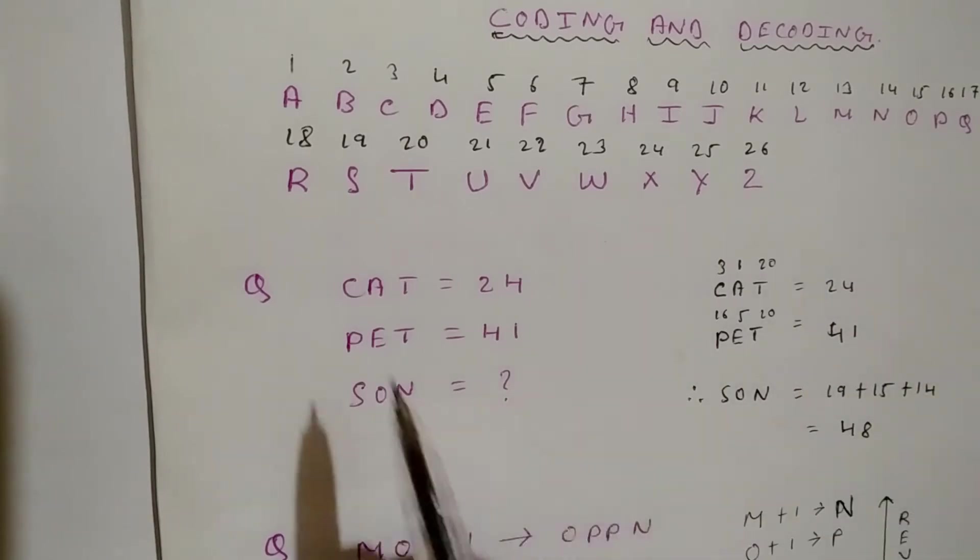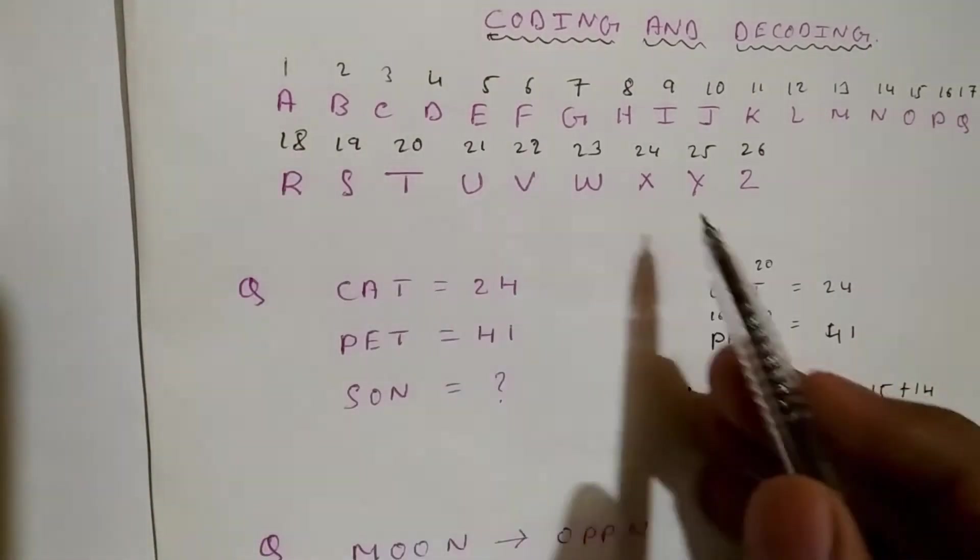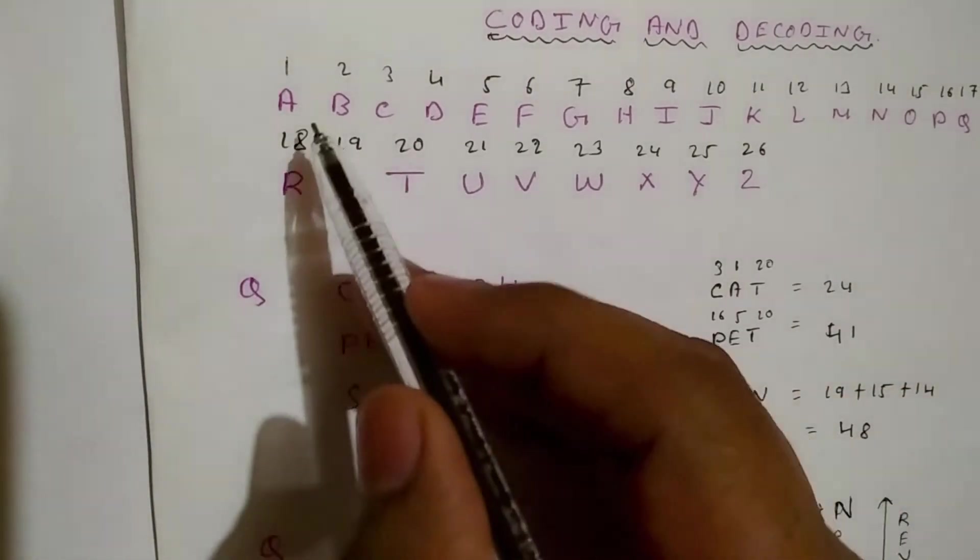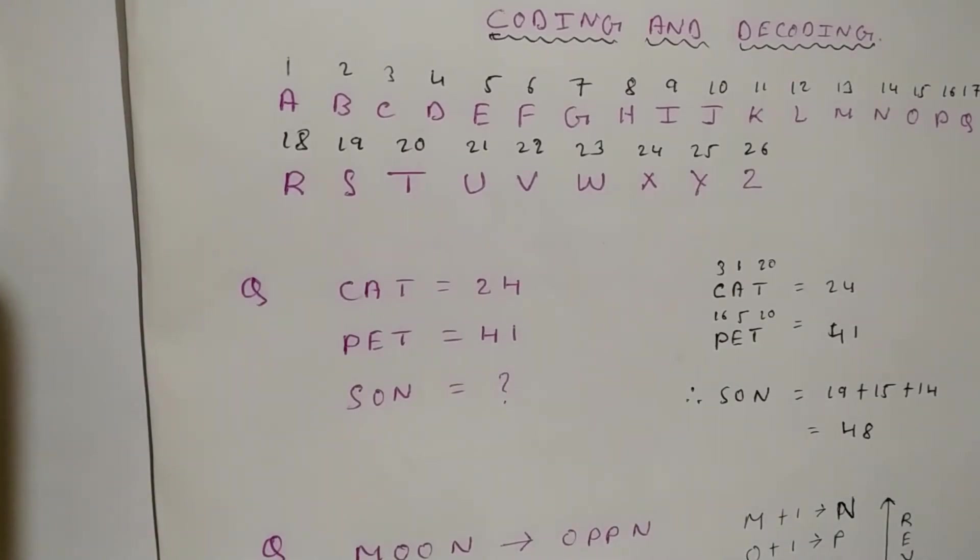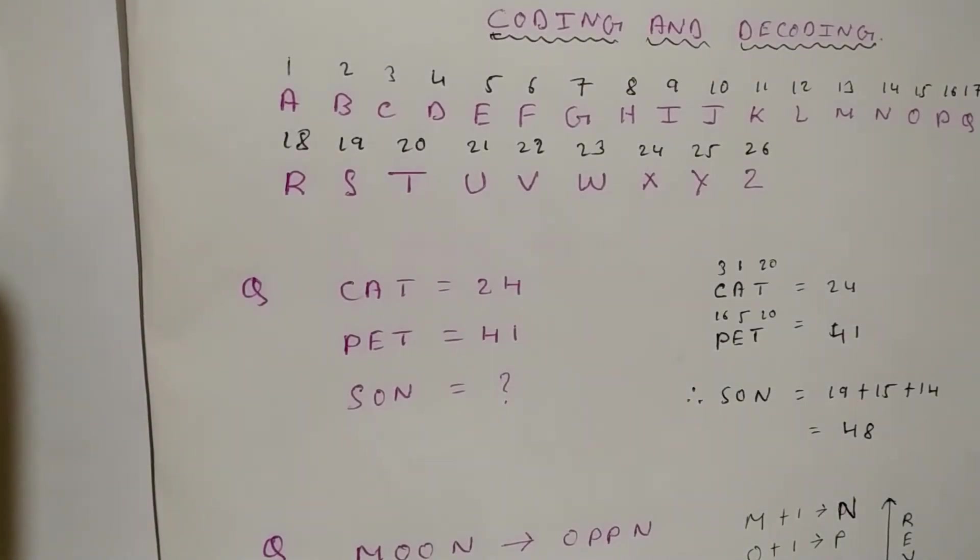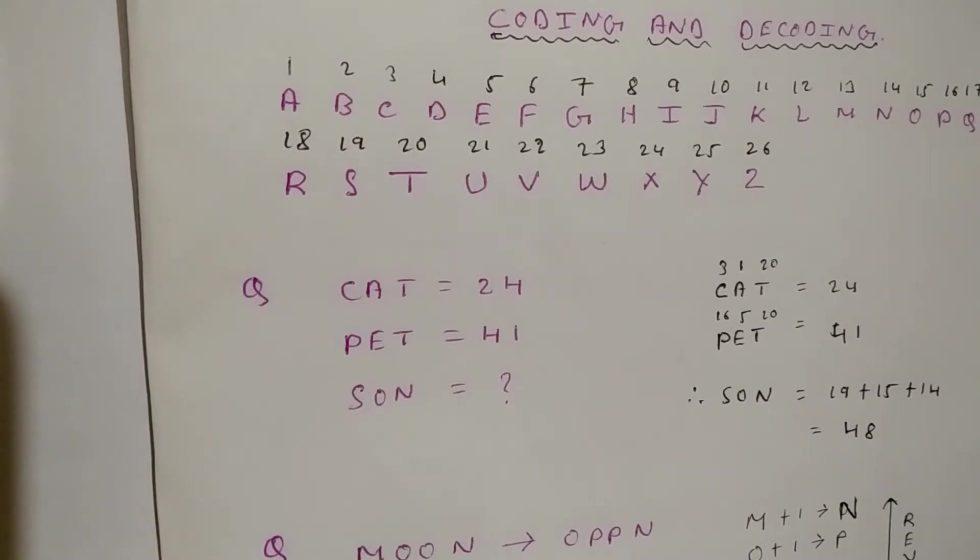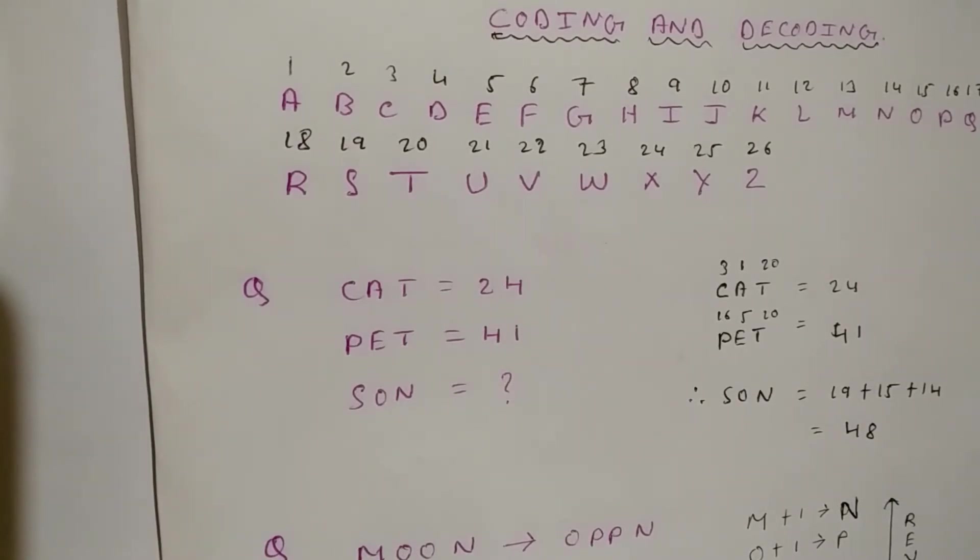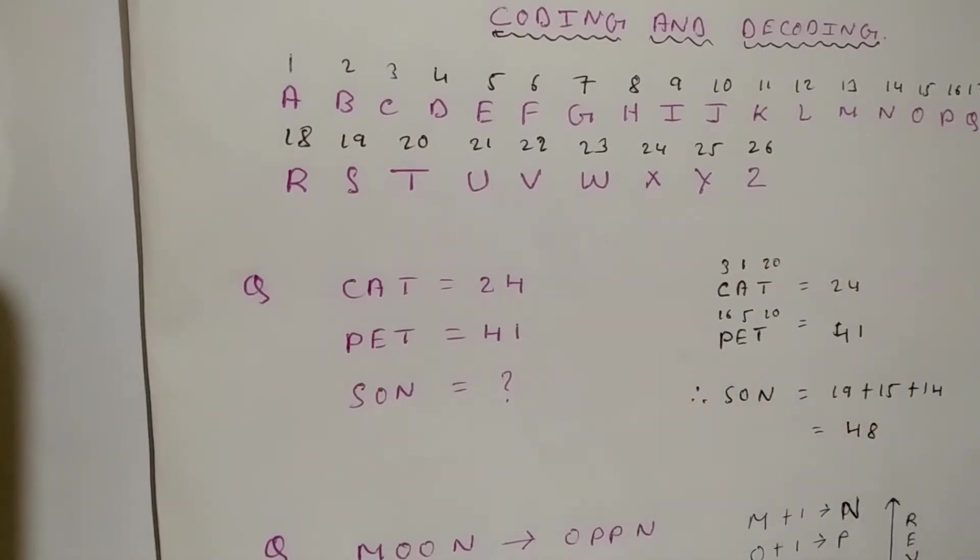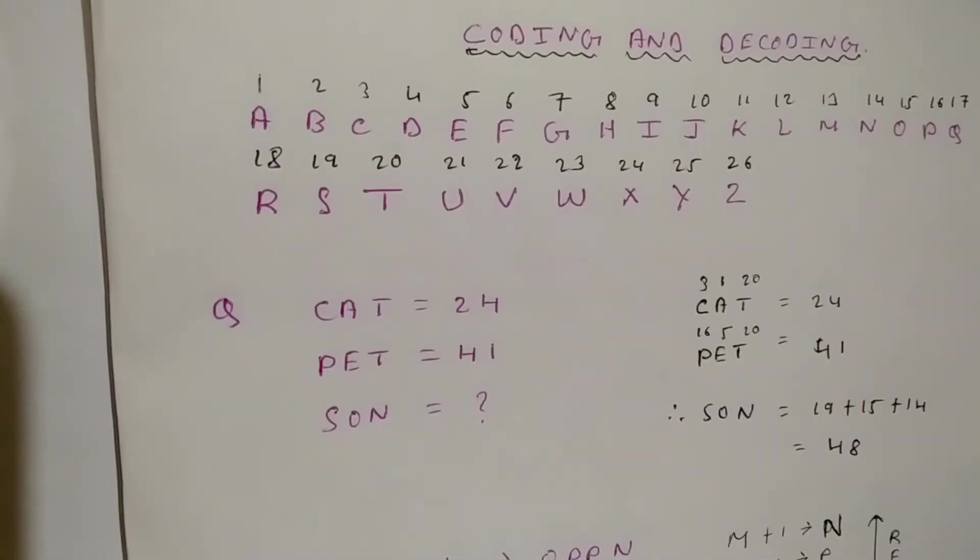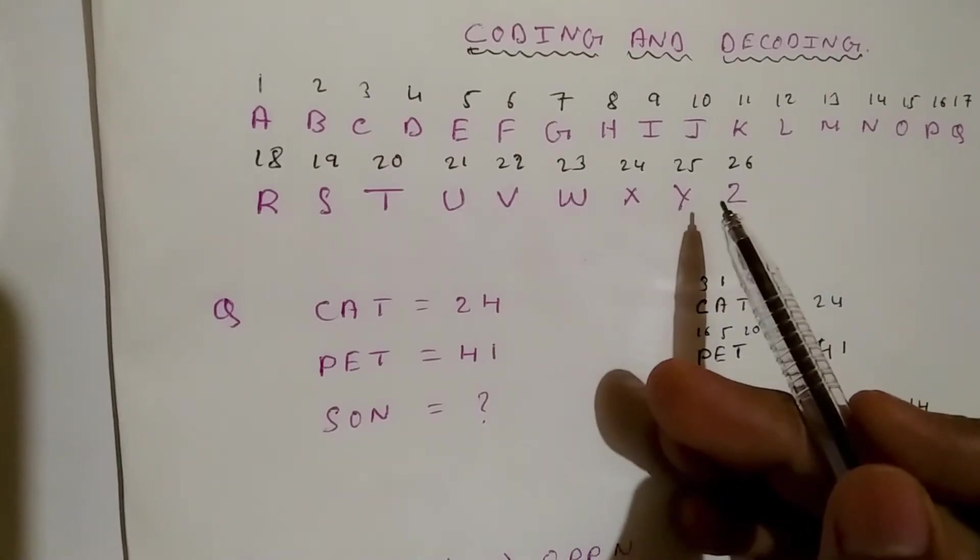...that you note down A to Z and its corresponding numbers 1 to 26. Whenever you sit in examination, this is my first tip and it really works because in examination you don't have time to write all these things. So whenever you sit in examination, the first thing you should do is write these things.